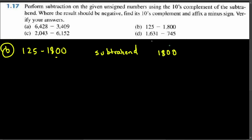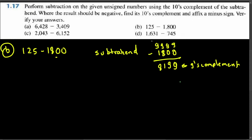To find the tens complement of 1800, first take the 9's complement. Put 9 on top of each digit and subtract: 9 minus 0 is 9, 9 minus 0 is 9, 9 minus 8 is 1, 9 minus 1 is 8. So the 9's complement is 8199. Then add 1 to get the tens complement: 9 plus 1 is 0 carry 1, 9 plus 1 is 0 carry 1, 1 plus 1 is 2, and 8 stays. The tens complement is 8200.